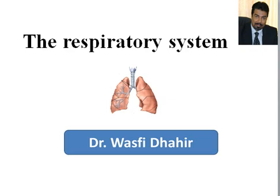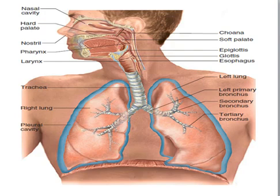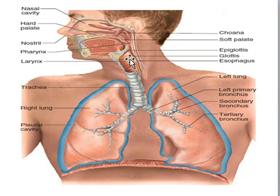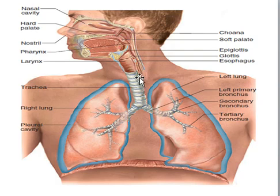We can divide the respiratory system into two types of divisions. The first division is according to the location of the respiratory organ. The upper respiratory tract includes the airway from the nose to the larynx — meaning the organs located in the head and neck. The lower respiratory tract includes regions from the trachea and other organs located in the thoracic cage or thorax.